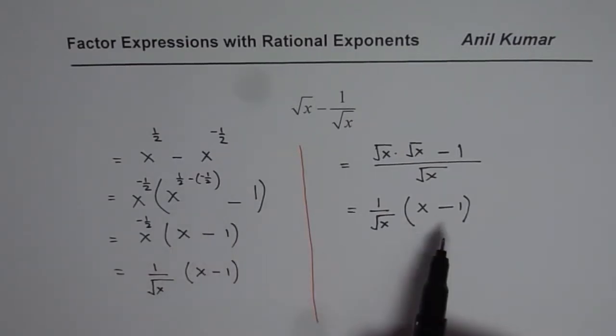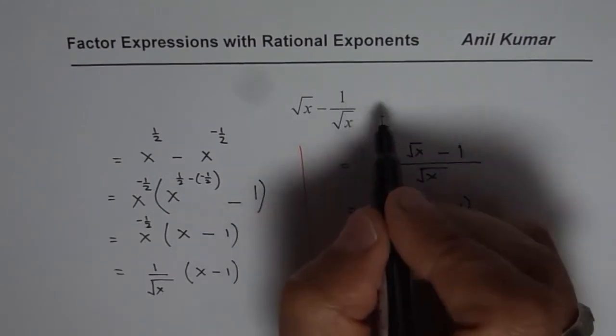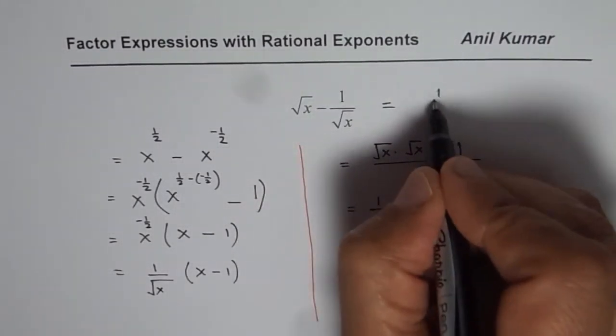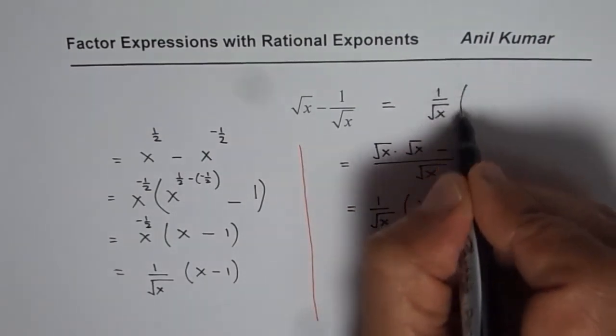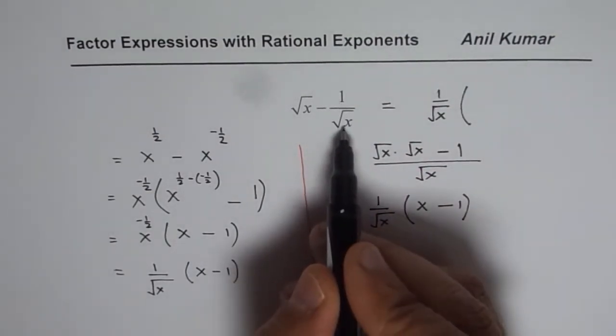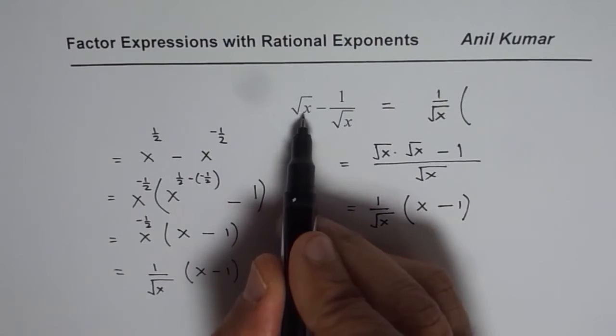Now when this method is very clear, directly you can factor this as 1 over square root of x, this is what we wrote here, 1 over square root of x. And when you factor 1 over square root of x, you have to multiply this by square root of x.